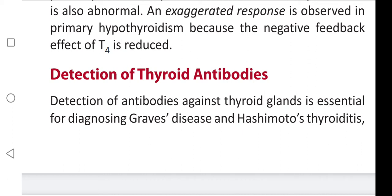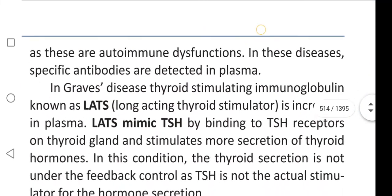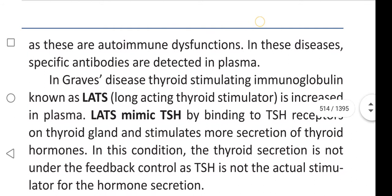Detection of antibodies against thyroid glands is essential for diagnosing Graves' disease and Hashimoto's thyroiditis. As these are autoimmune dysfunctions, in these diseases specific antibodies are detected in plasma.